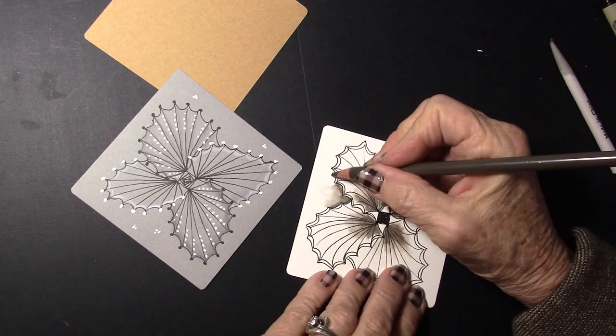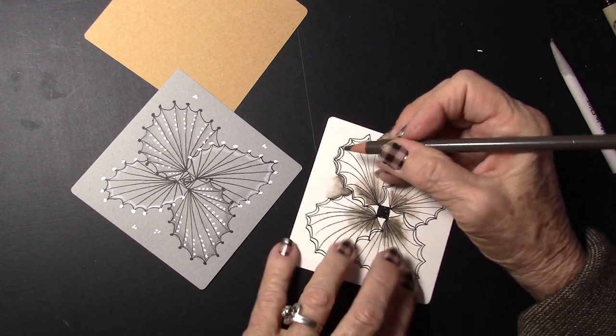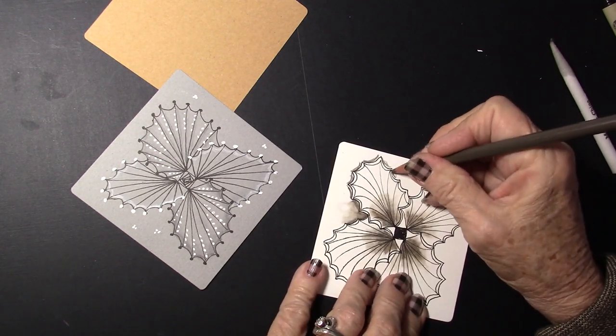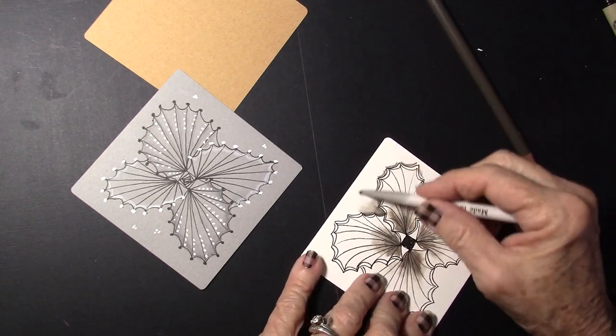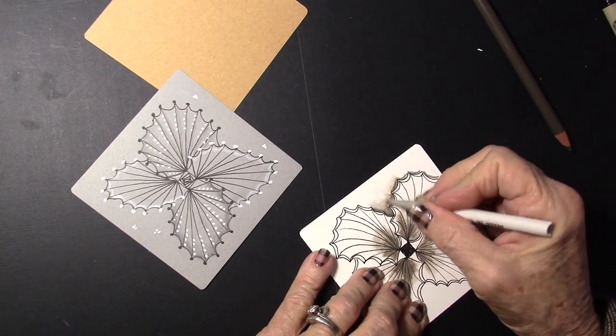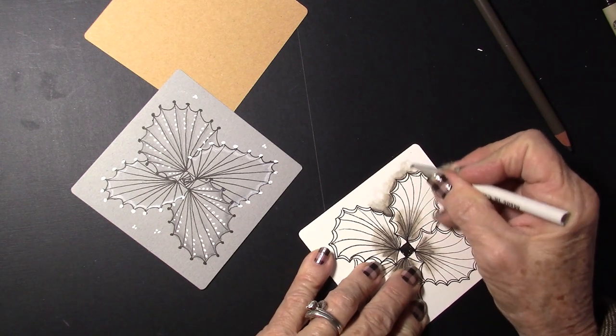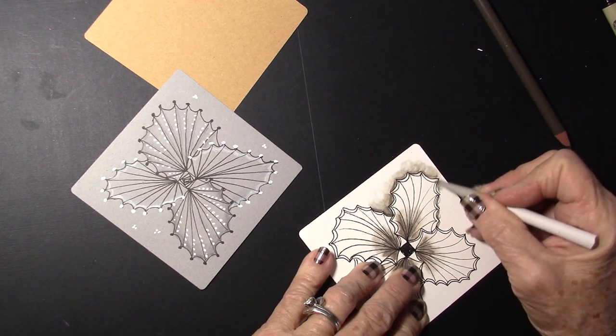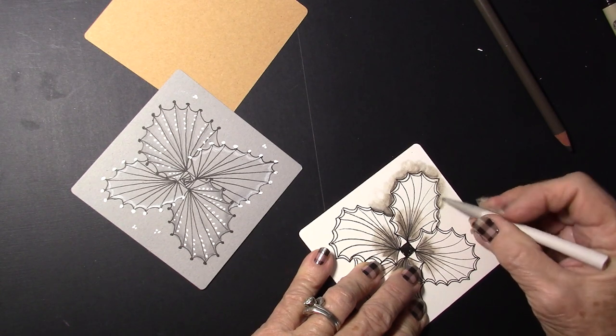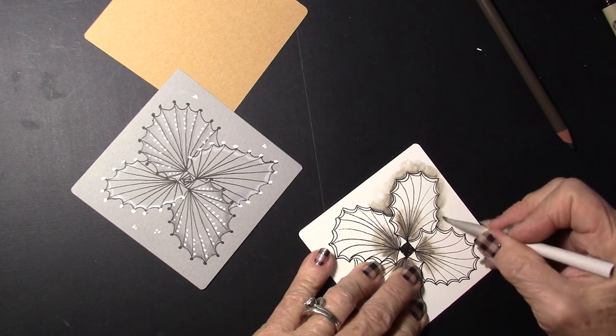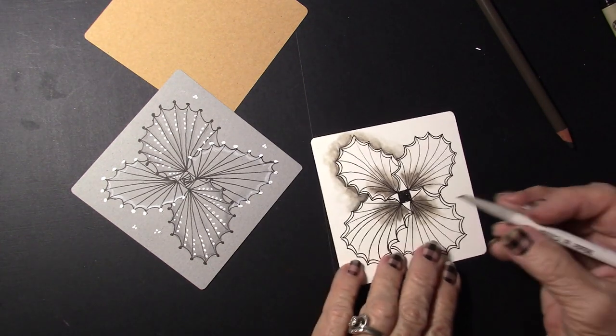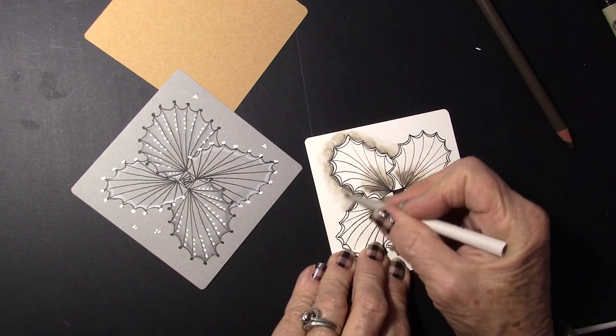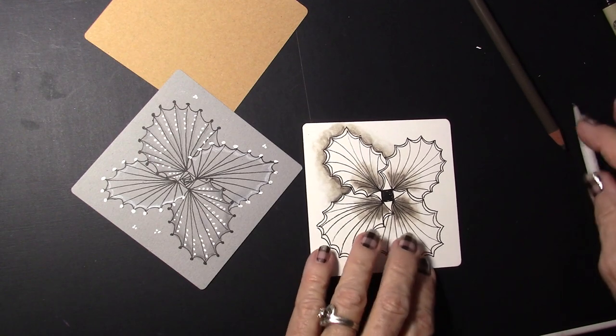So I'm going to go ahead and go around the outside of my scallops on this one. And I can see—I like the little circles. I just do little circles. I like how that's looking.